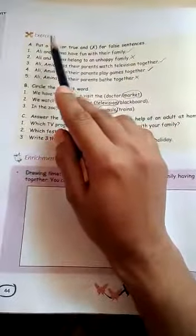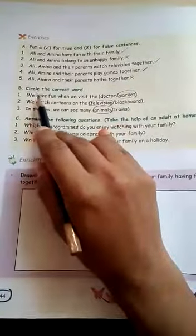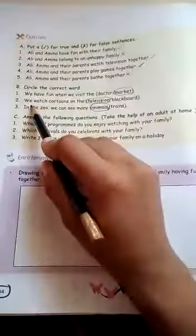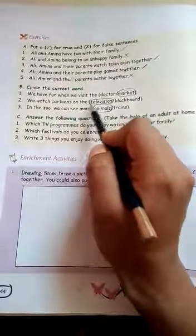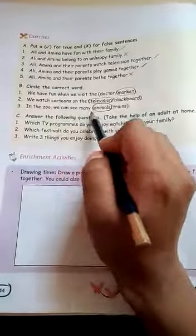What exercise we have done? We have done put tick mark for the true and wrong for the false statements. We have also completed circle the correct word, that is we have fun when we visit the market, we watch cartoons on the television, in the zoo we can see many animals.